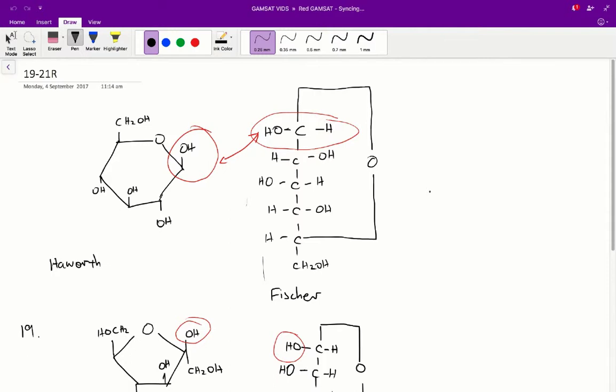Questions 19 to 21 in the ACER red paper. This sort of question analyzes your ability to convert between a Haworth and Fischer structure.